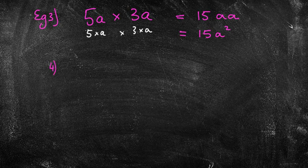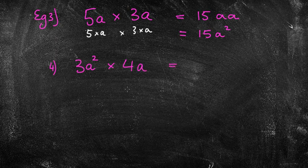What do you reckon would happen if I had 3a squared times 4a? What might happen there do you think? Well 3 times 4 is 12. And this time I've got a squared times a. Well that means I've got a times a and I've got another times a. So how many a's have I got? I've got 3 of them. And we can put a cube.